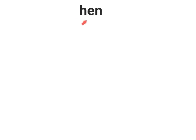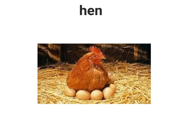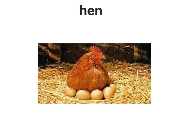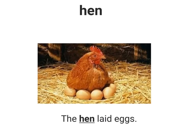The first word is hen. This is what a hen looks like. Hen is a type of bird. A sentence with the word hen in it is: The hen laid eggs.